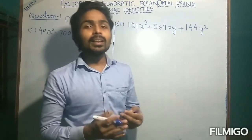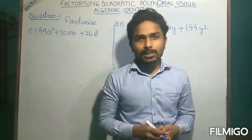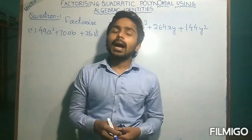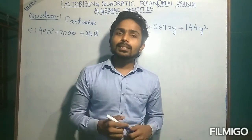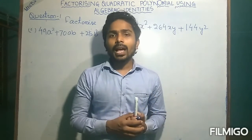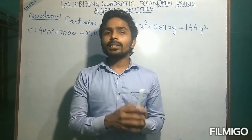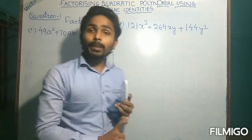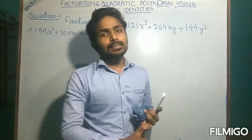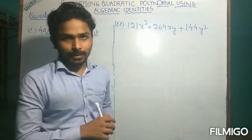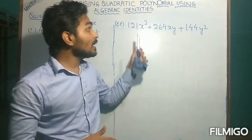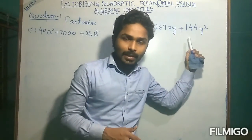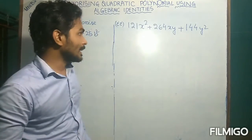Hello students. In this class we will continue reading the factorization of any quadratic polynomial using algebraic identity. In the previous classes we have already completed how to factorize any quadratic polynomial using two techniques: the first one is the factor theorem and the second one is the middle term splitting method. In this class we will factorize this type of quadratic polynomial using an algebraic identity.